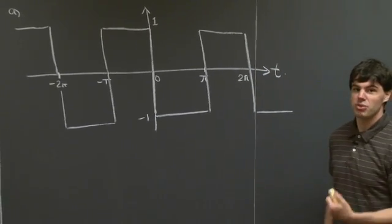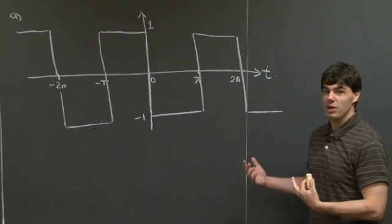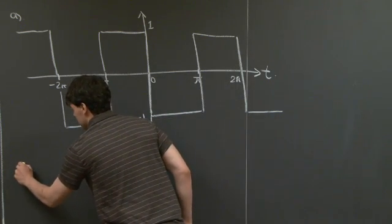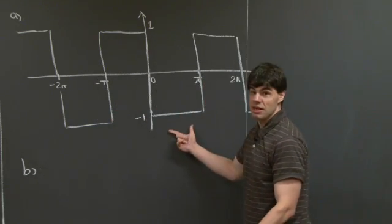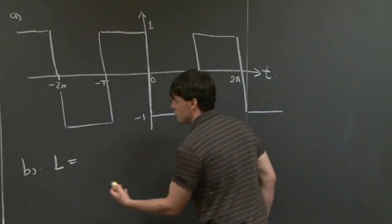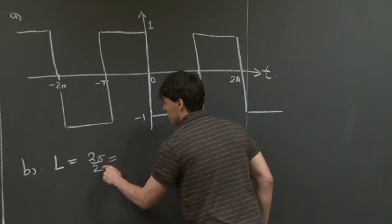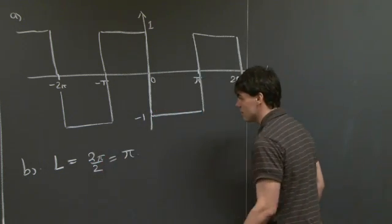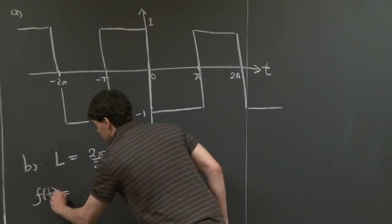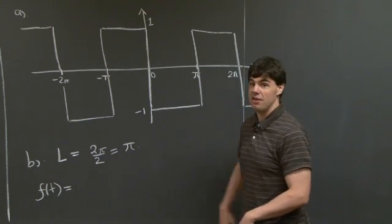For part b, which is the real meat of the problem, we're interested in computing the Fourier series for f of t. We can always write down a Fourier series for any periodic function. Specifically, in this case, the periodic function we're interested in has period 2π. In the class notes, we've identified l with half the period. So in this case, l is 2π divided by 2, which gives us π.